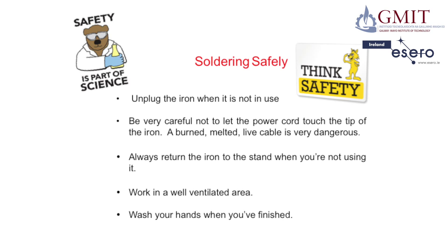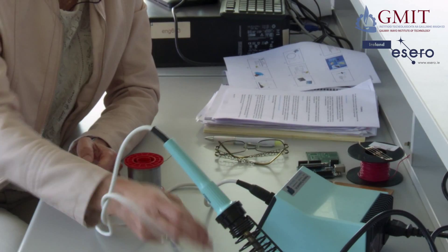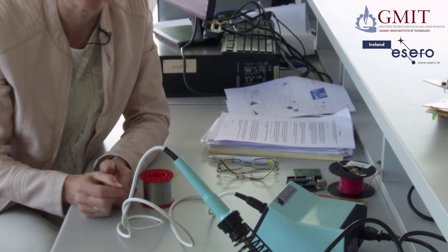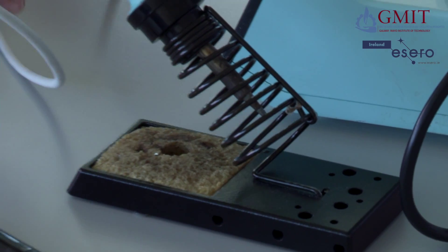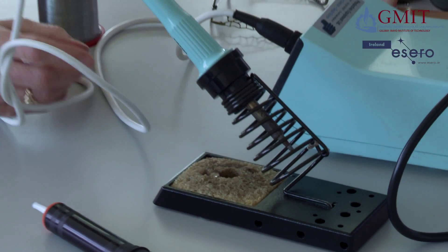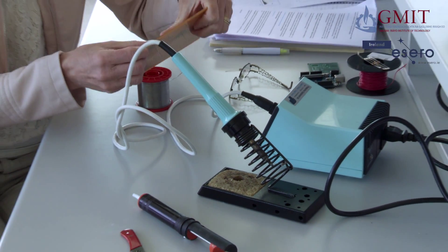So you need to be careful when you're using them and always put them back in the stand when you're not using it. I'll also use a wet sponge here to clean the tip of the soldering iron. For this demonstration session, I'm going to solder a couple of resistors and wires into some strip board.